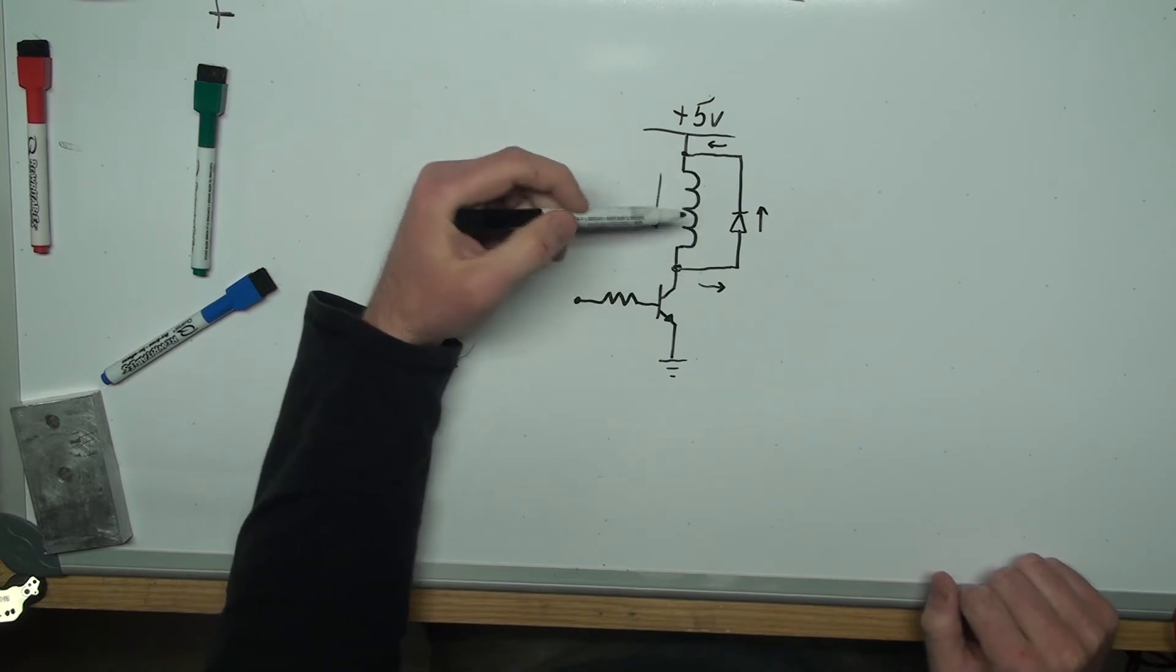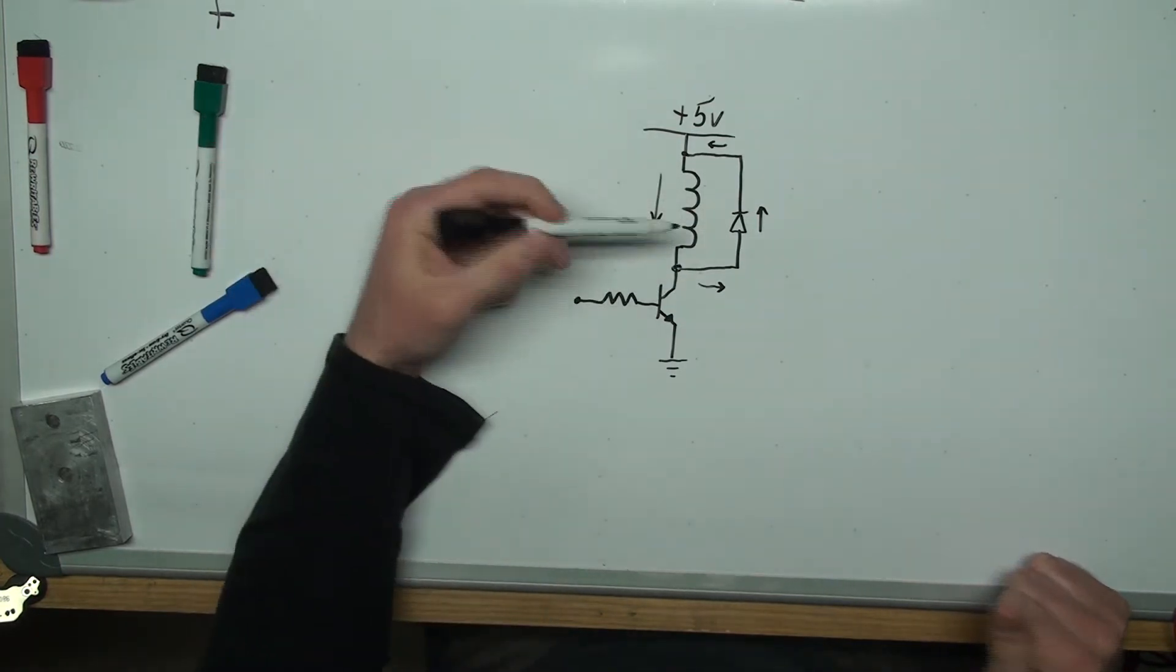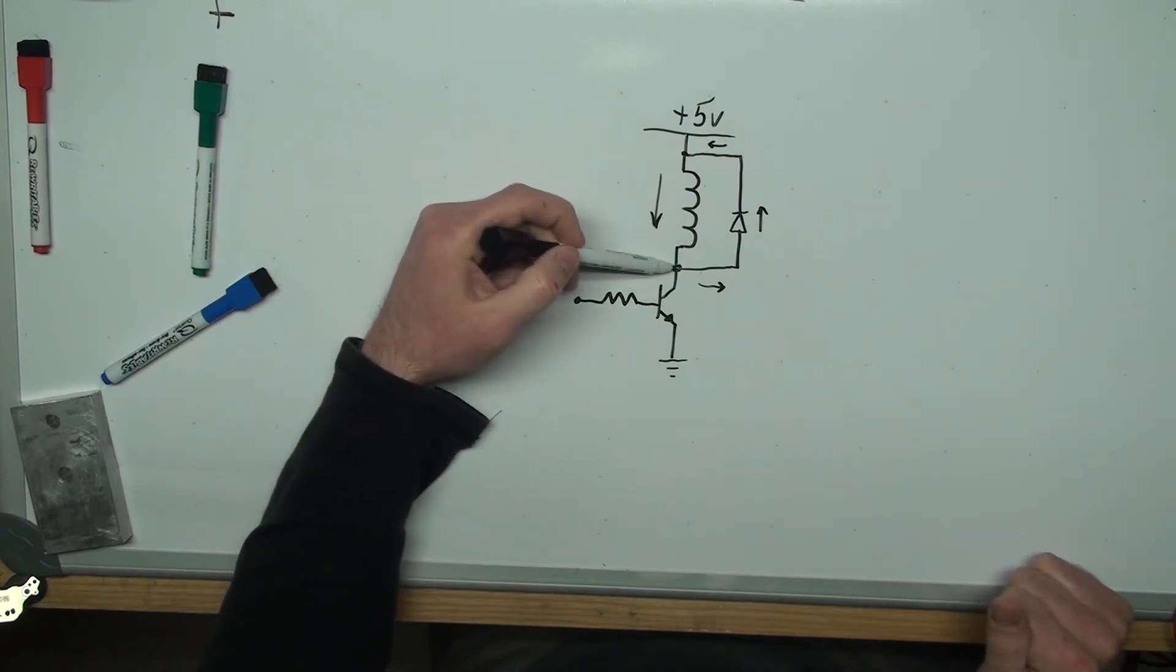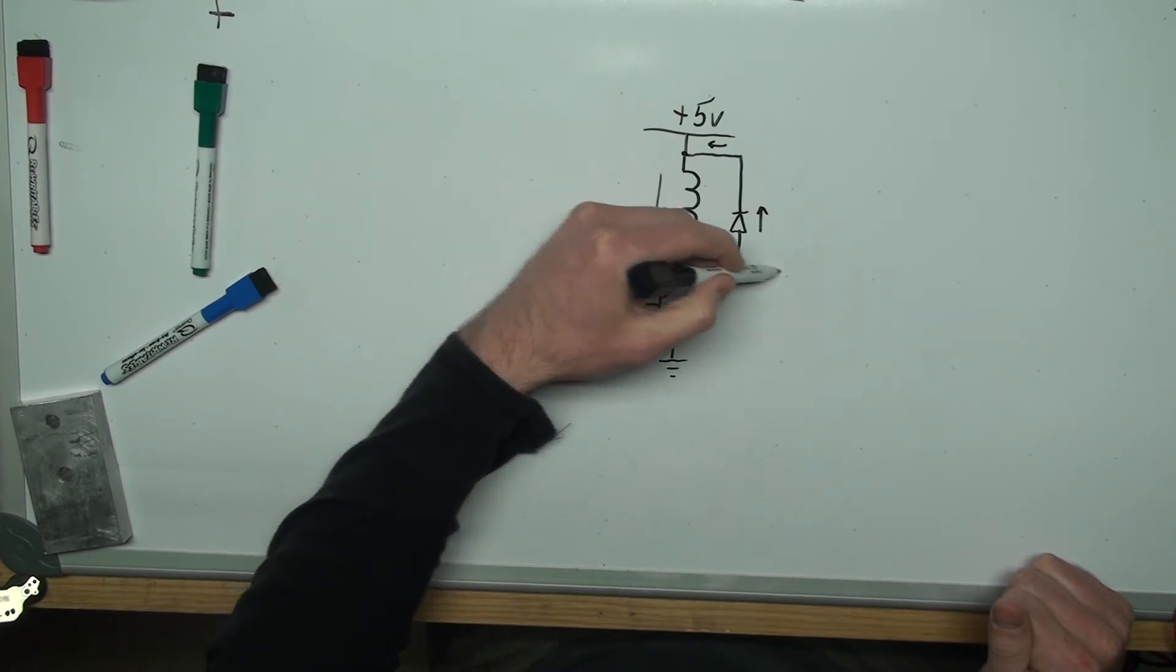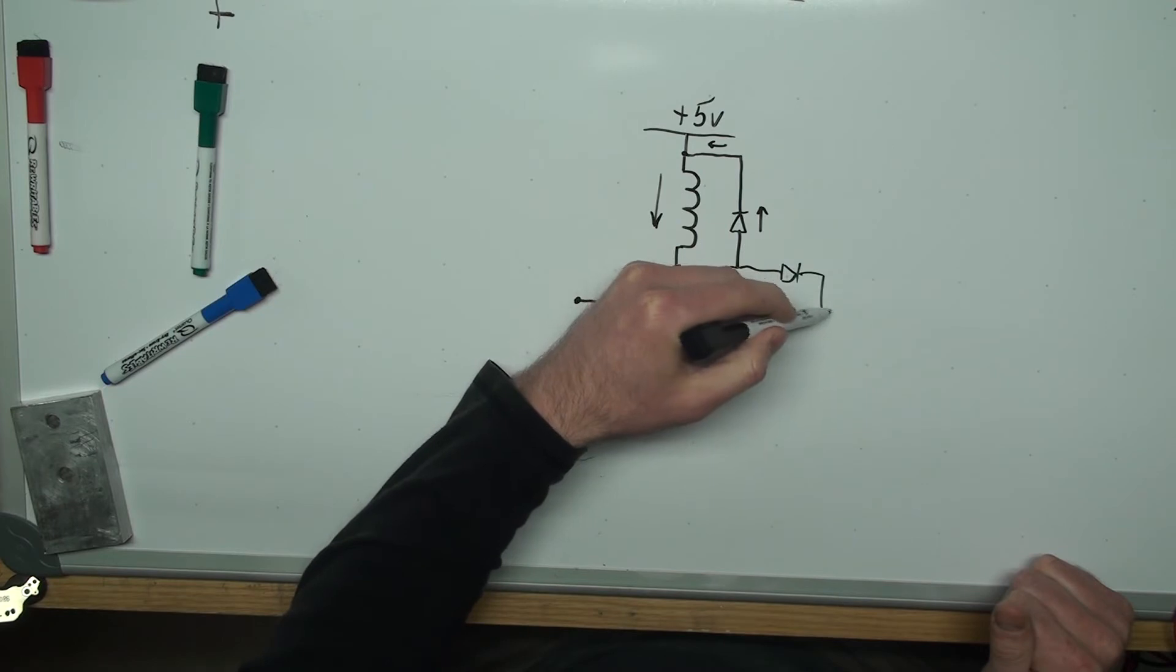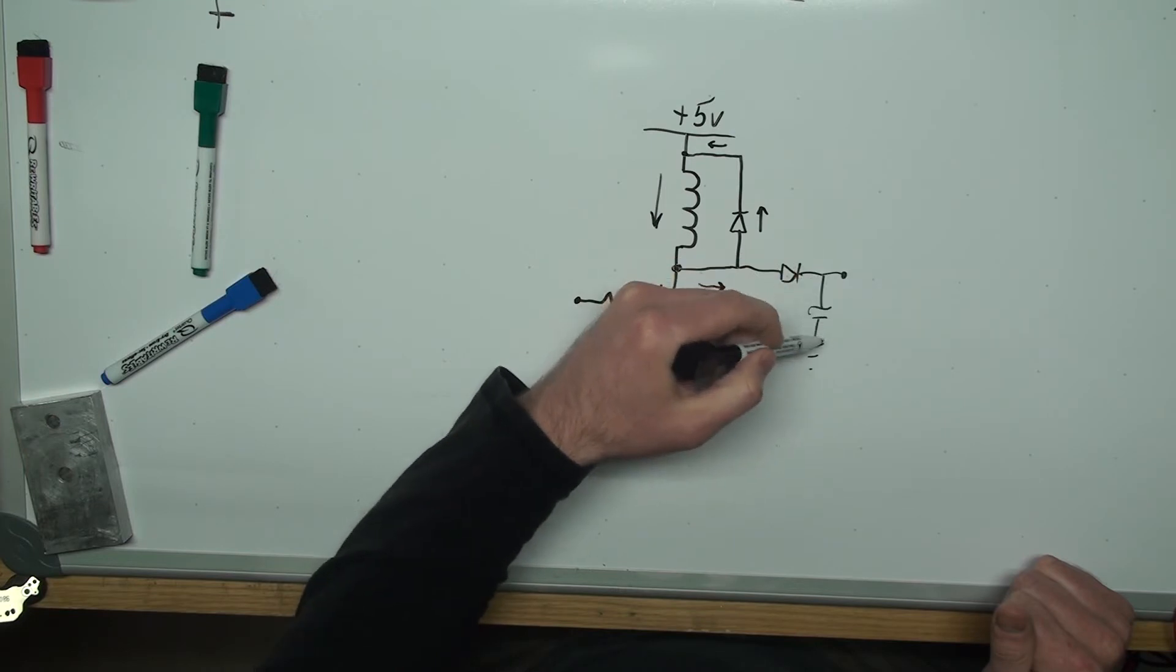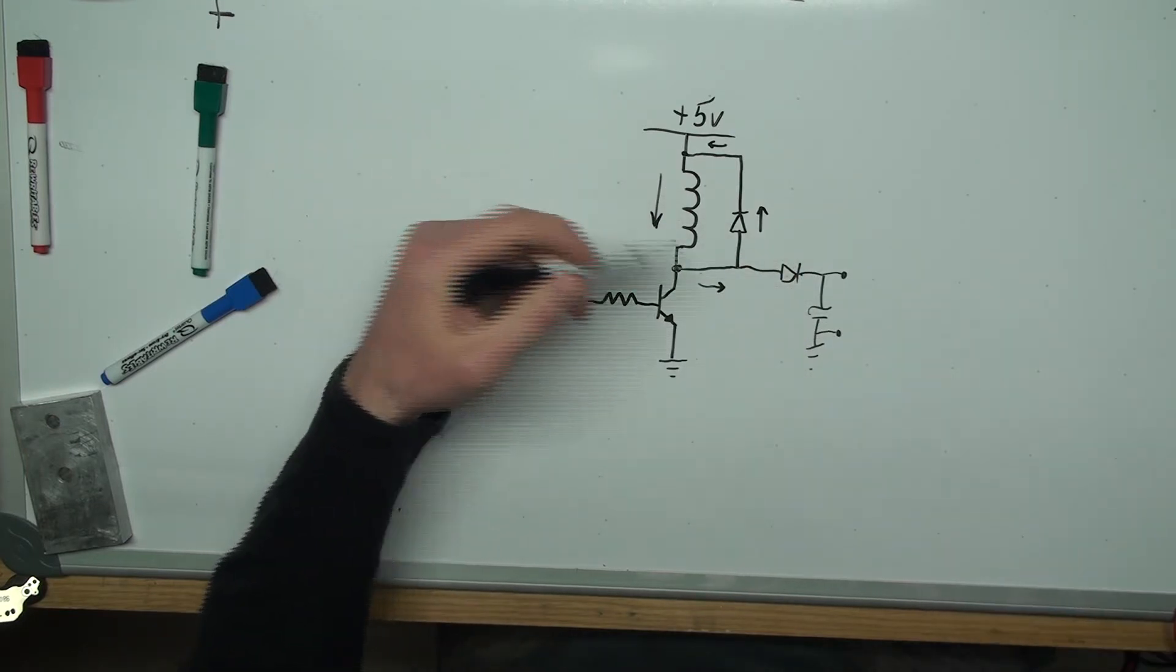In order, since I don't have a scope, to kind of demonstrate this high voltage, I'll be adding another diode out here and a capacitor connected to ground, and this is where I'll be attaching my multimeter.